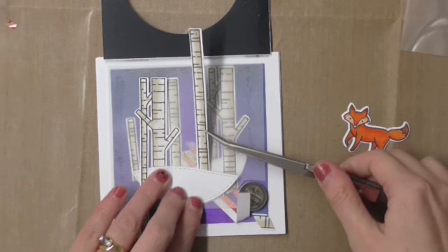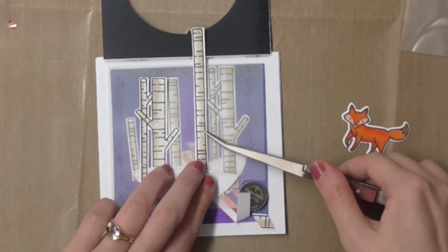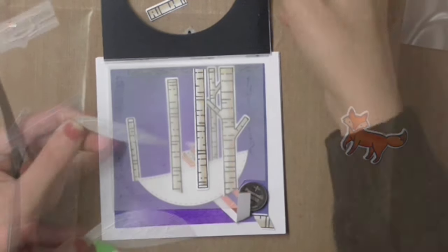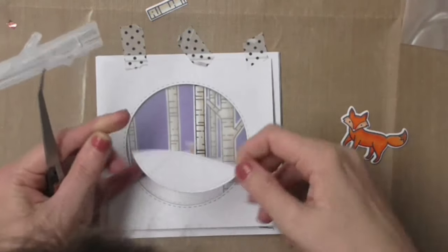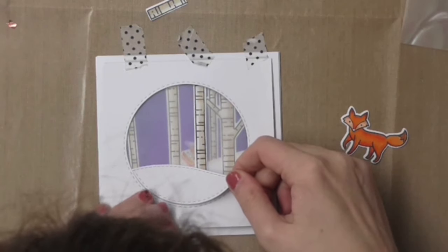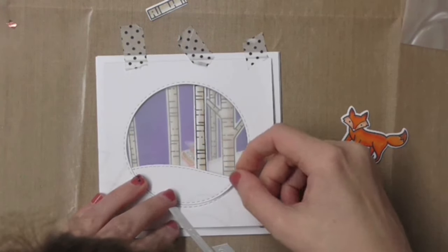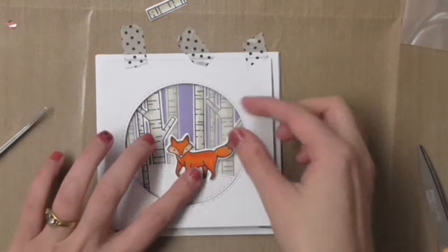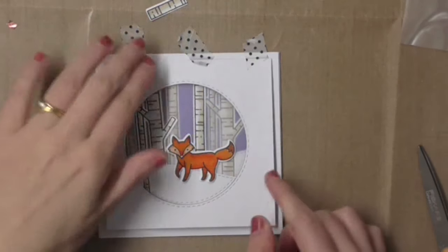So let's stick on the rest of these trees and then the front section of my snow and then my fox will go in the middle here.